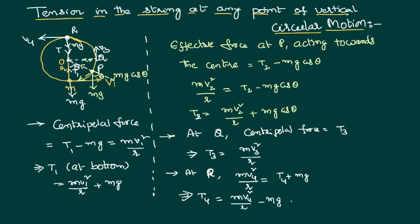It is clear from this discussion that if the body has the same velocity at all points, the tension at the bottom will be highest and the tension at the top will be lowest.